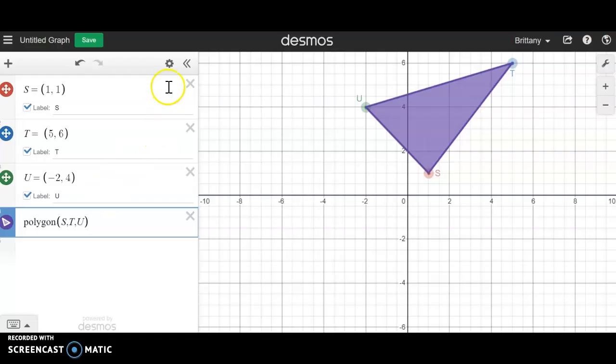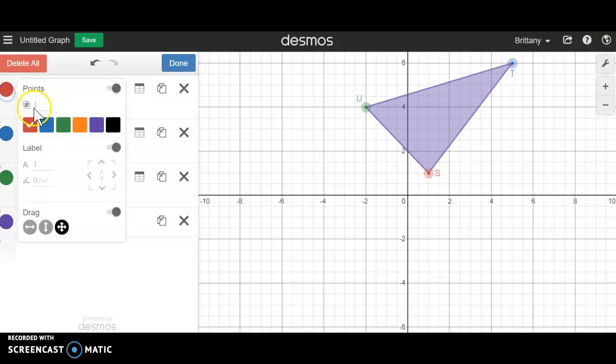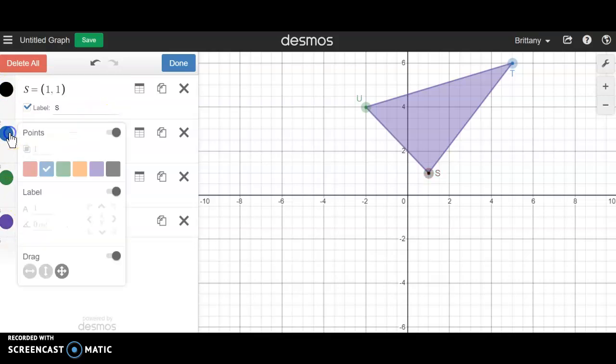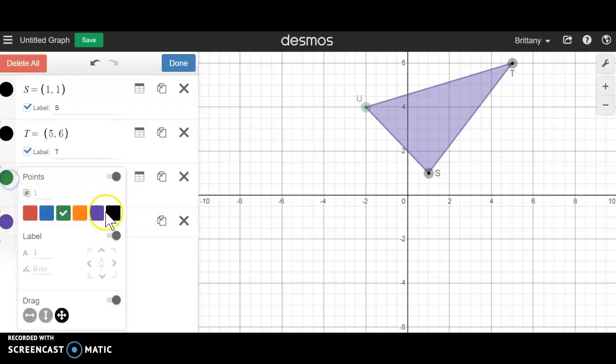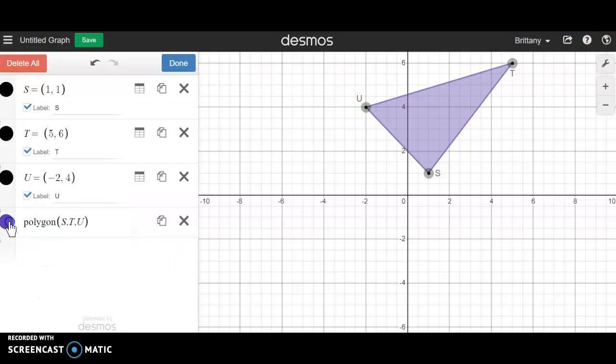Now I can go into my settings and I can change these colors. So if I want all my points to be black, I can do that. I can keep my triangle purple or make it a different color, and there you have it. That's how you can graph on Desmos.